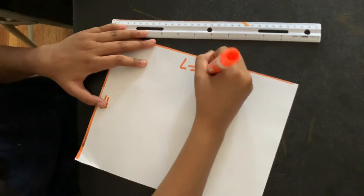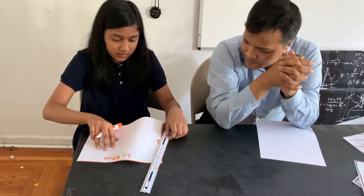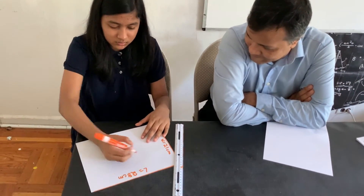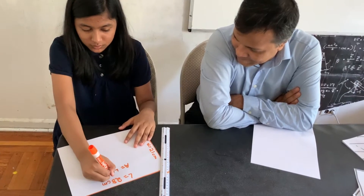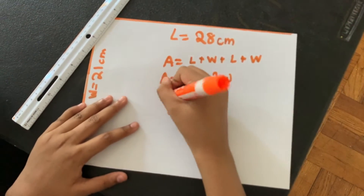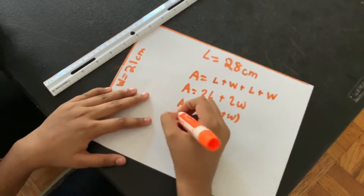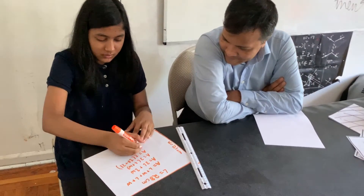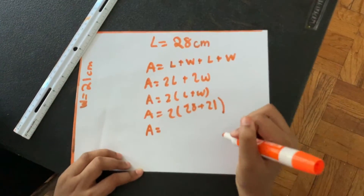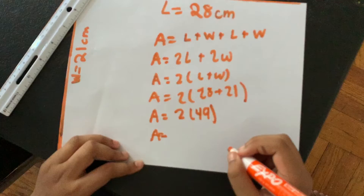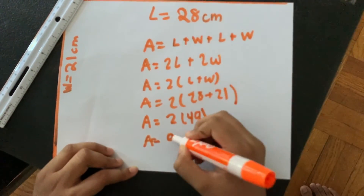It gives you 28 centimeters. Then 21 centimeters. Now, area equals length plus width. So area equals 21, giving you 49 — something in meters.